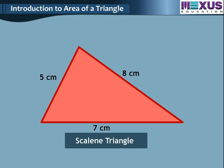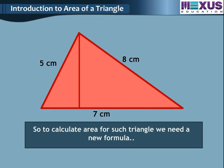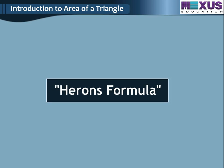Now, if we have a scalene triangle with all sides different, can we find its area using Pythagoras theorem and the formula used above? No, because the height cannot be found out. So, to calculate the area for such a triangle, we need a new formula. Let us learn this new formula called Heron's formula in the next slide.